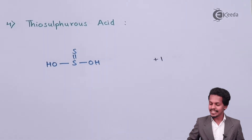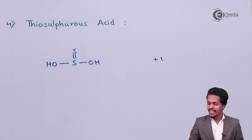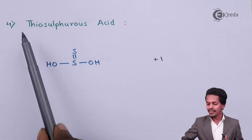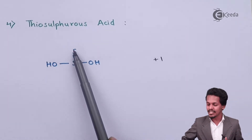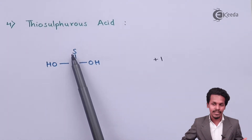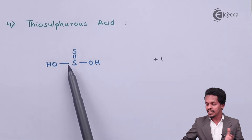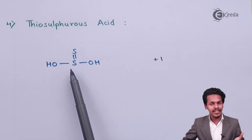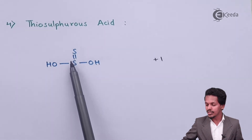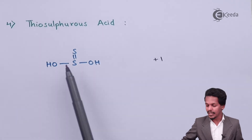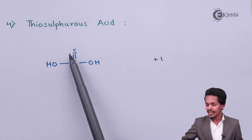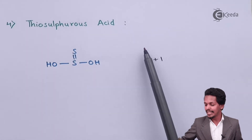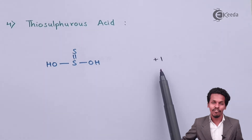The next one is thiosulfurous acid. The prefix 'thio' means sulfur — so instead of an oxygen atom, there is a sulfur atom. The structure resembles the previous one: the two valencies of sulfur are satisfied by OH groups, and sulfur is double-bonded to another sulfur atom. The oxidation state of sulfur is +1.